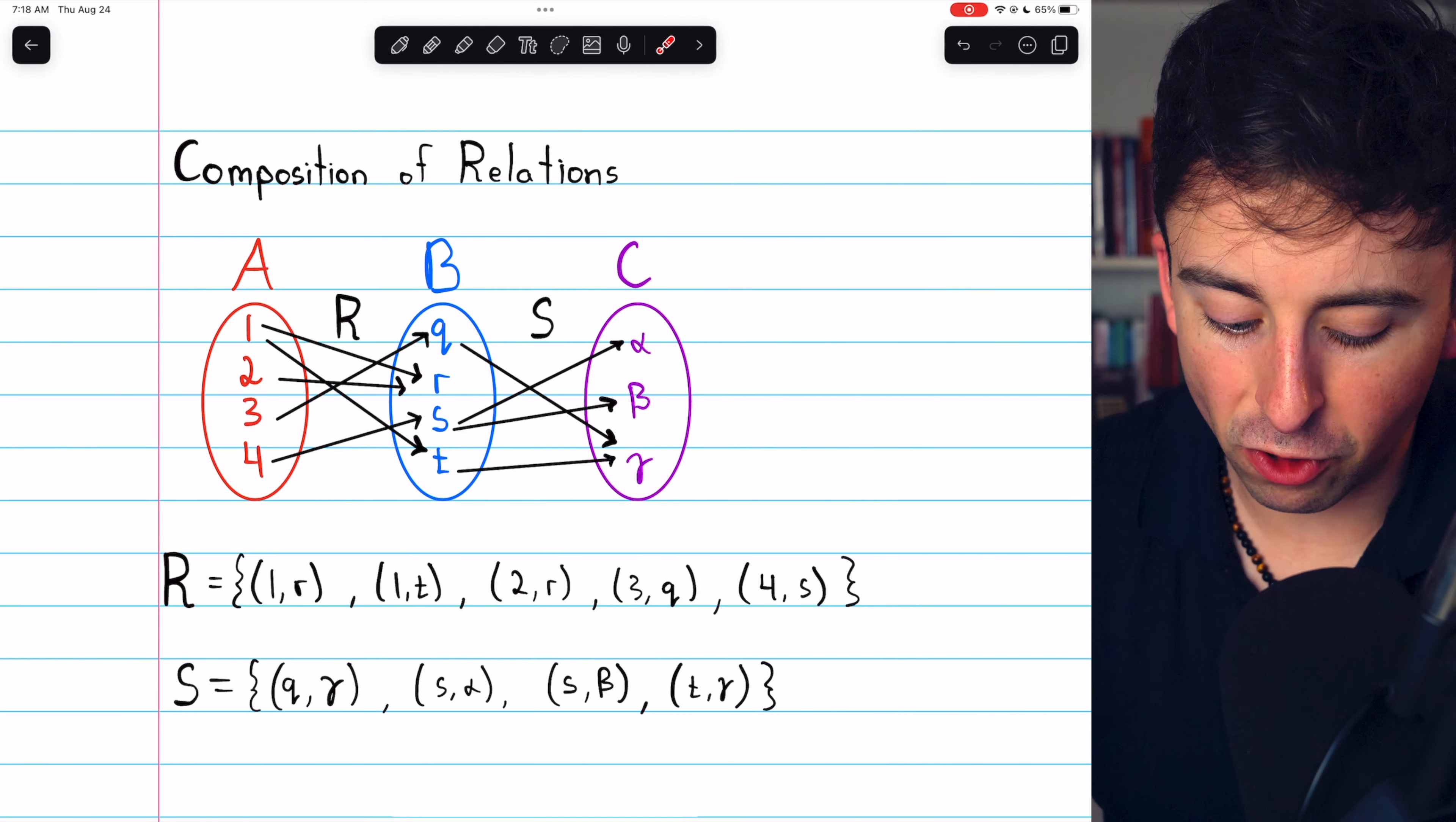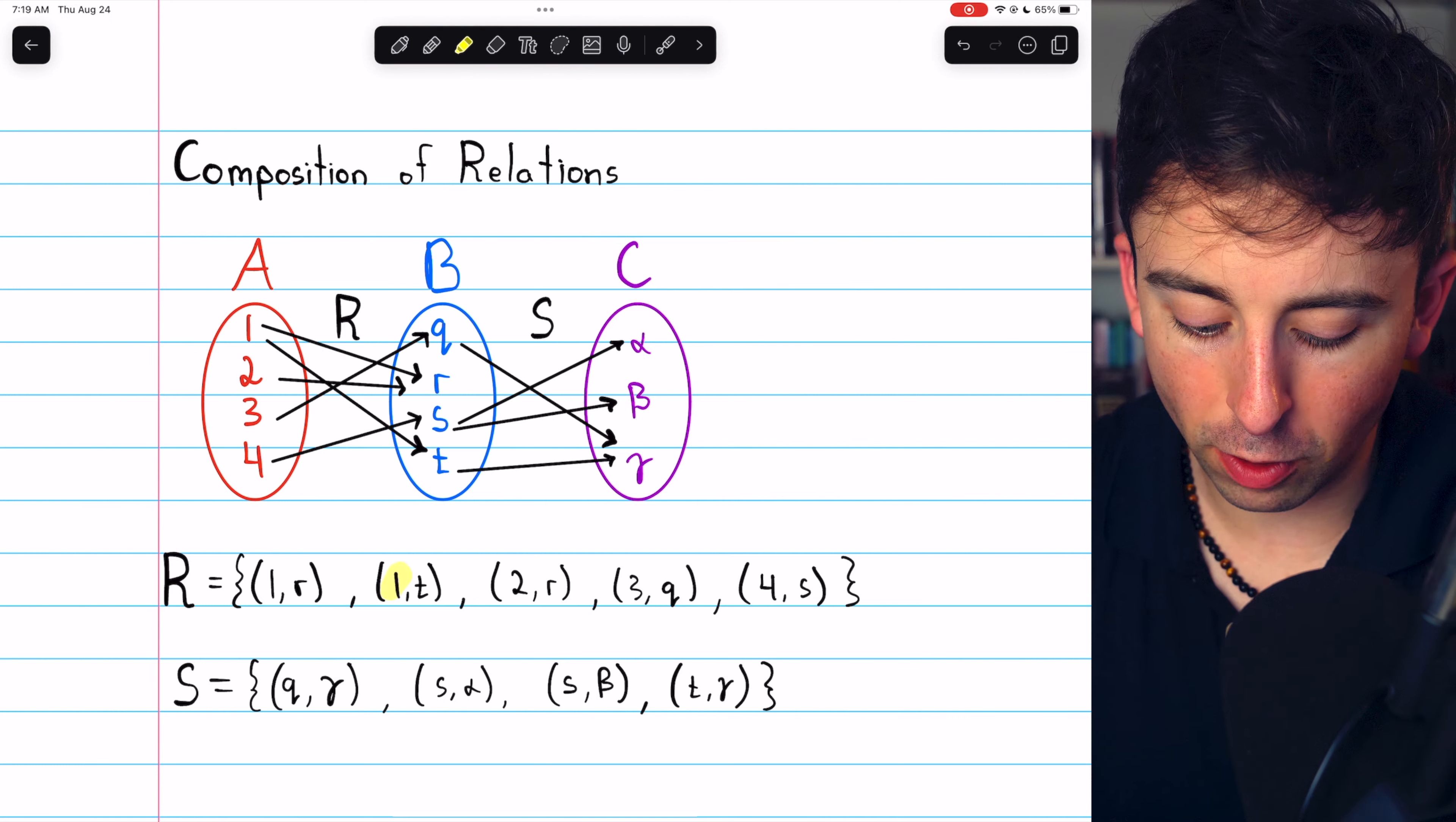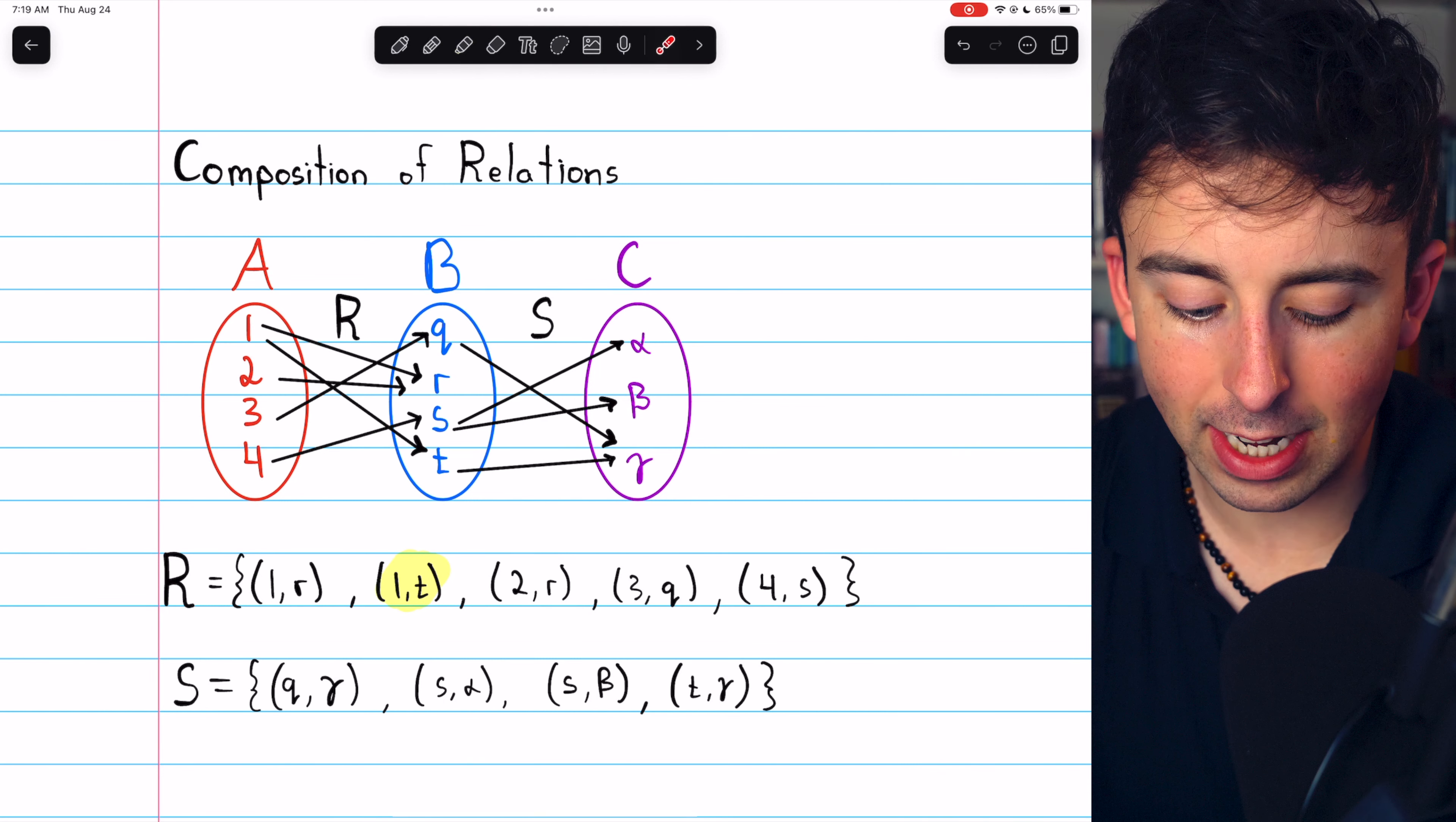Here are those two relations written out precisely as sets. For example, we can see under the relation R, one is related to T.